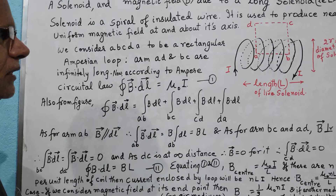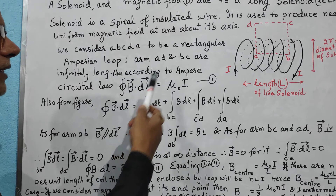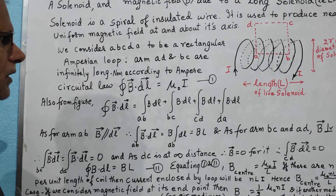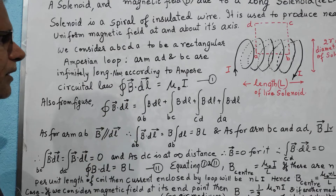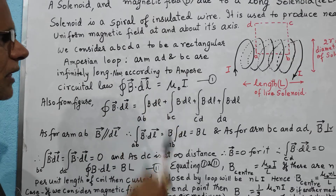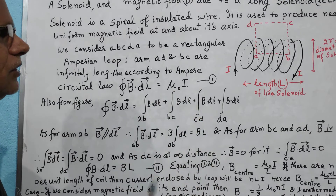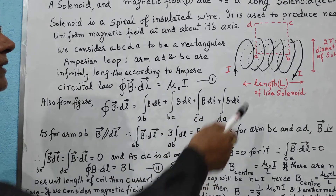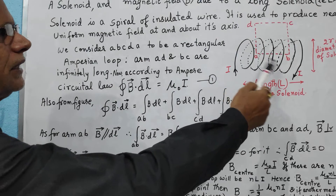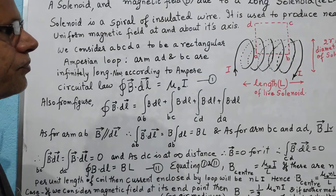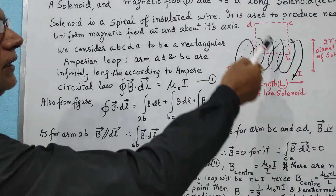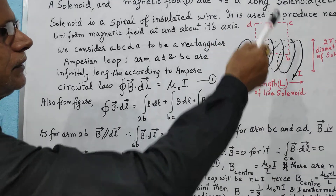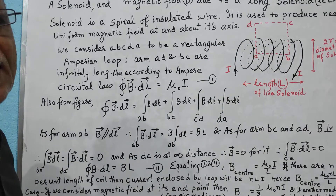According to Ampere's circuital law, we will find this line integral of B dot dL = μ₀I — we already know from this law. Now we consider an Amperian loop A, B, C, D, A such that the arms AD and BC are infinitely long.